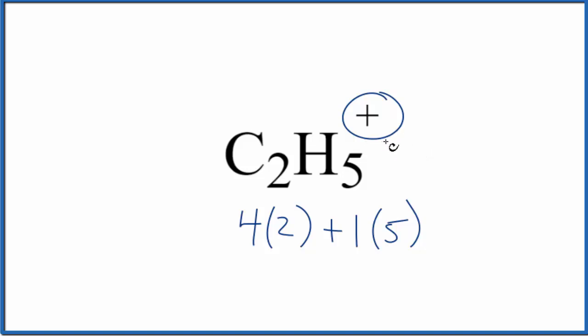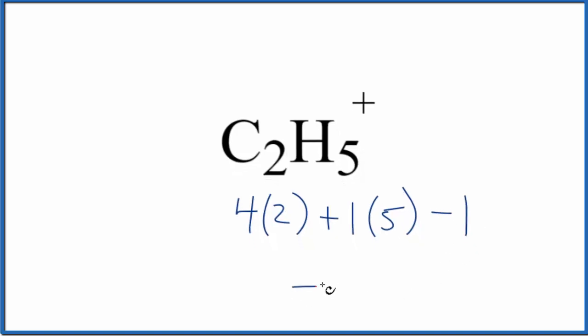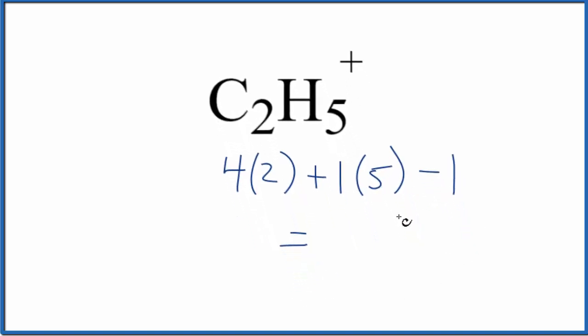If you lose an electron, since they're negative, you're left with a positive charge. So we need to subtract a valence electron. So 8 plus 5 is 13, minus 1, 12 total valence electrons for the C2H5+ Lewis structure.